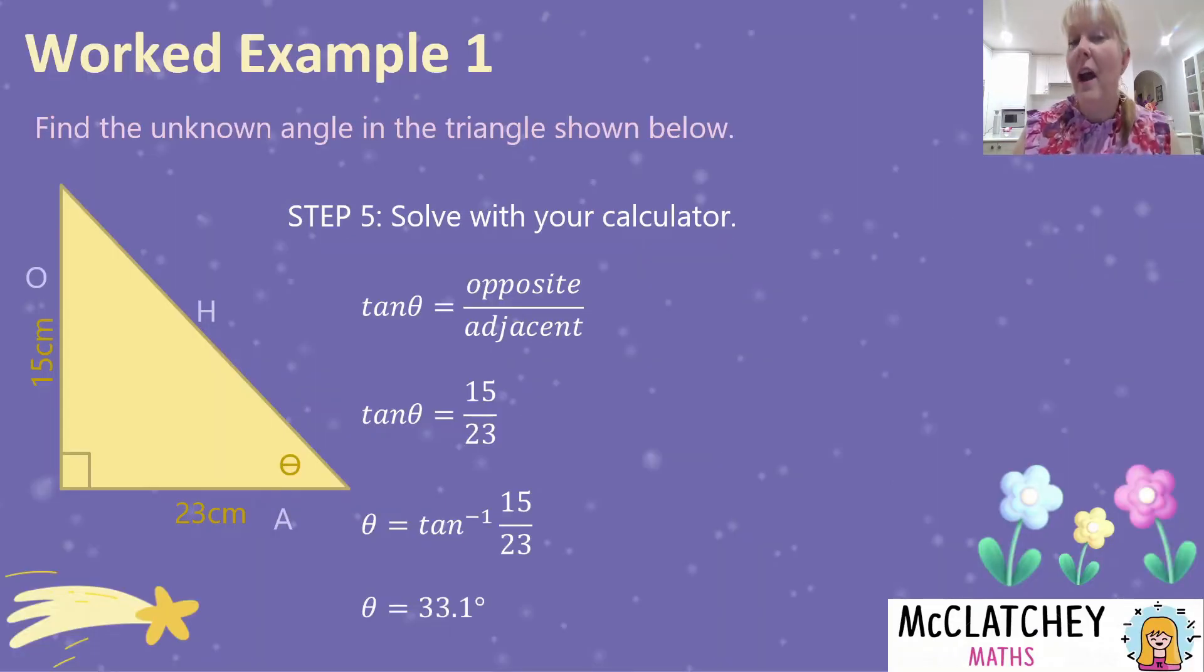So we found the angle is equal to 33.1134196 degrees. We now need to round that in an appropriate way. Most of the time we're asked to round to the nearest degree. In that case, it would be 33 degrees. I've decided to do this to one decimal place, 33.1 degrees. Always read your question carefully. I notice a lot of students forget to look at the question and see how to round properly.